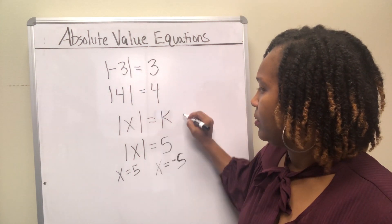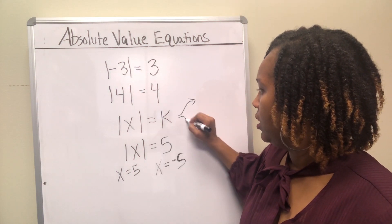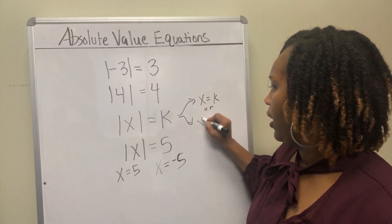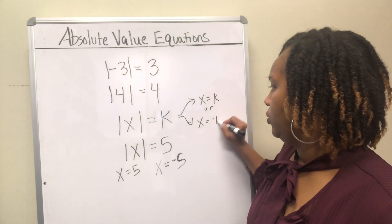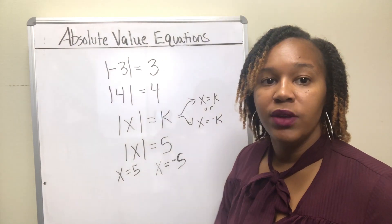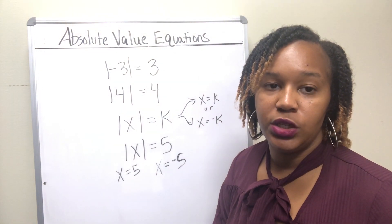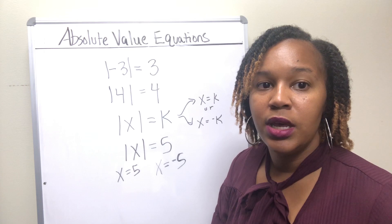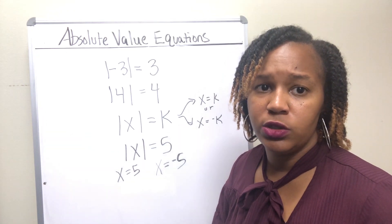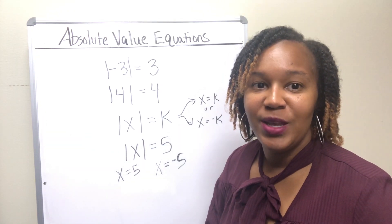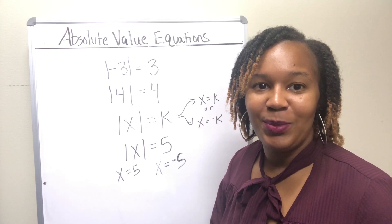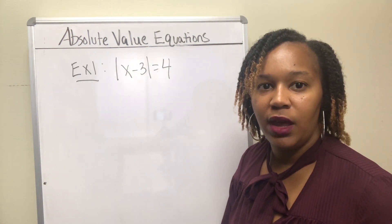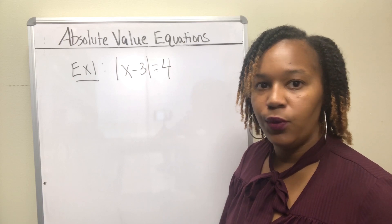So if you have an absolute value equation, that gives you x equals k or x equals negative k. Whenever you're solving an absolute value equation, you're going to break it into two separate equations, except in two special circumstances we'll talk about in a bit. For example 1, we're going to solve the absolute value of x minus 3 equal to 4.